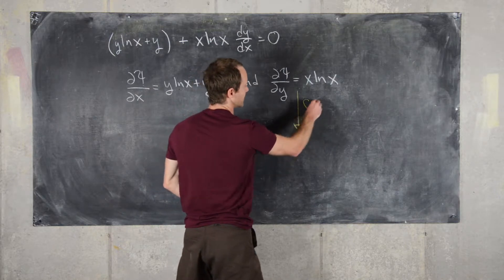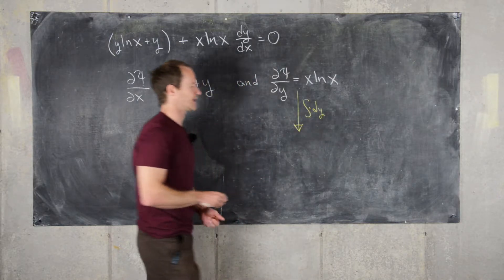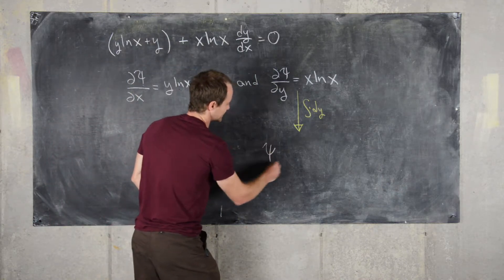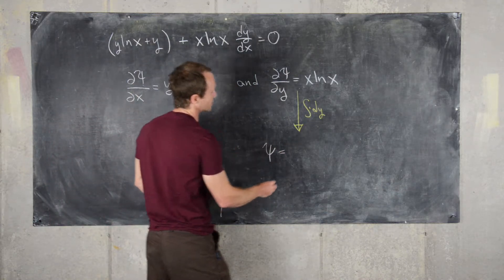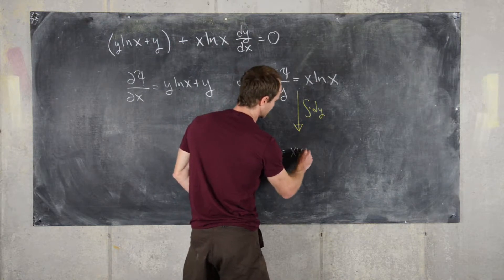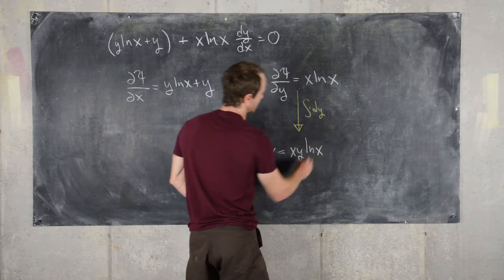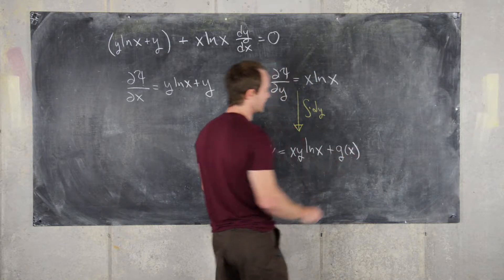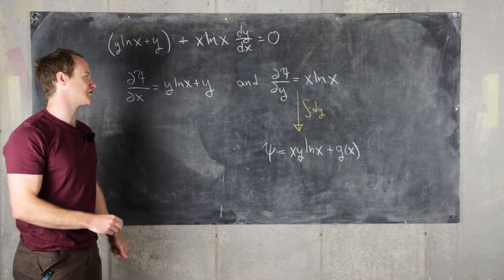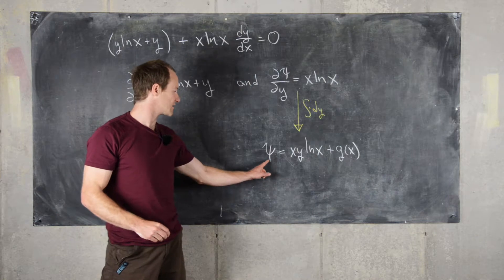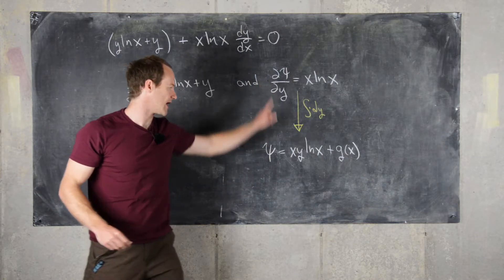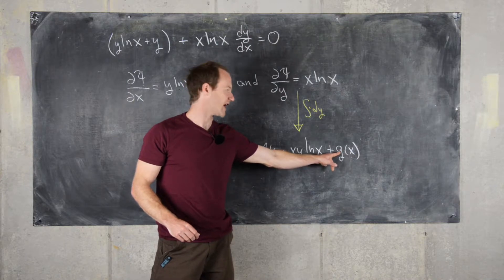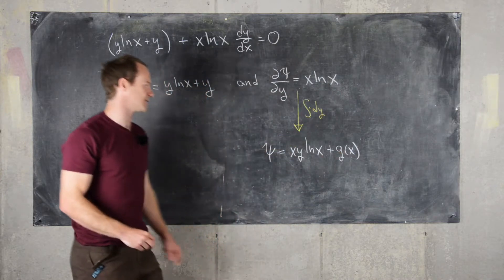Let's take the anti-derivative with respect to Y. That means Psi will equal X times Y times the natural log of X plus G of X, where G is some function of X only. When we take the partial of this with respect to Y, a pure function of X is treated as a constant and disappears.